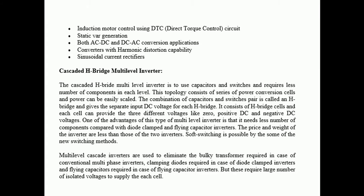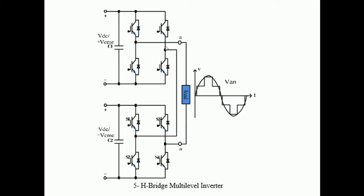The combination of capacitors and switches forms an H-bridge cell, giving a clamped DC voltage. Each H-bridge cell can provide three different voltage levels: +V, 0, and -V. One advantage of this type is that it needs fewer components compared with diode clamp and flying capacitor inverters. The output of one bridge is in series with the output of the other bridge, adding their voltages. This gives a five-level output: levels 1, 2, 3, 4, and 5 (including 0 as a level).